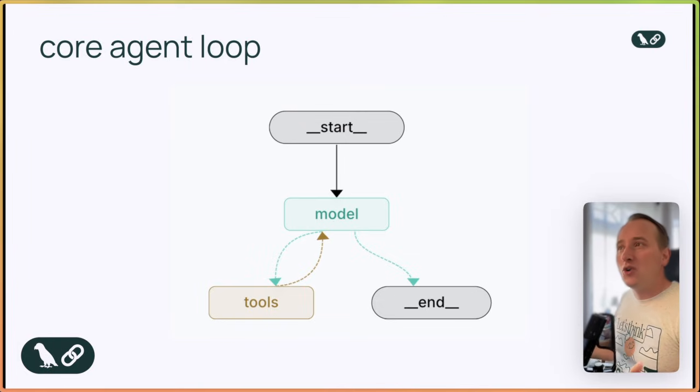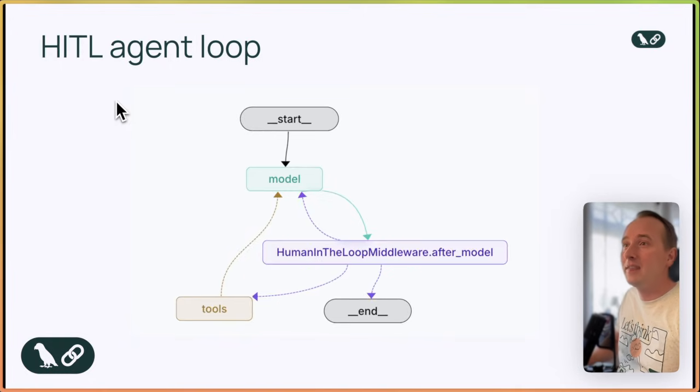This reason-act-observe pattern is what allows agents to handle complex multi-step workflows from retrieving information to performing real-world actions. In some of these cases, we don't want the agent to act completely on its own though.